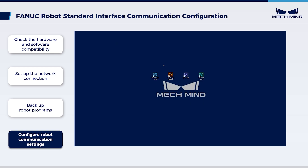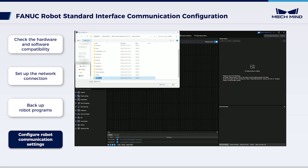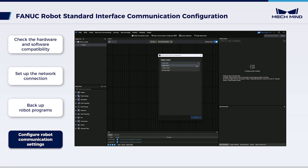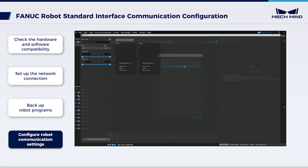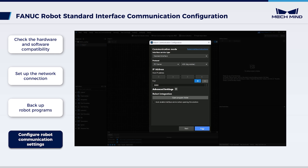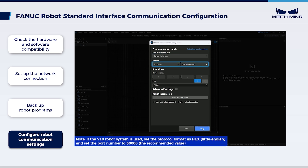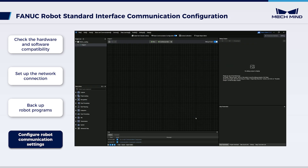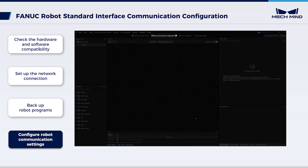Subsequently, configure the robot communication settings and prepare the program files. Open MechVision and create a solution based on your application scenario. Click Robot Communication Configuration on the toolbar. Select the listed robot from the Select Robot drop-down menu, then click Select Robot Model and select the robot model in use. Click Next. Make sure the interface type is Standard Interface and the protocol is TCP Server and HexBigEndian. Click Open Program Folder to find program files, copy these program files to the flash drive, and click Apply. On the MechVision interface, the robot communication configuration switch will have turned blue.